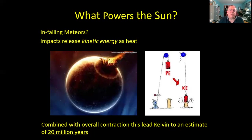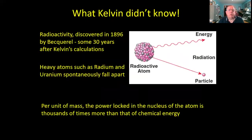Sadly, by the time he'd done that calculation, the geologists had moved the goalposts again—the Earth was now thought to be not just millions but perhaps hundreds of millions or billions of years old. Of course, back then Lord Kelvin didn't know about radioactivity and the energy stored in the atomic nucleus. Radioactivity wasn't discovered for another 30 years, when it was found that heavy atoms like radium or uranium would spontaneously split, spitting out other particles and energy.